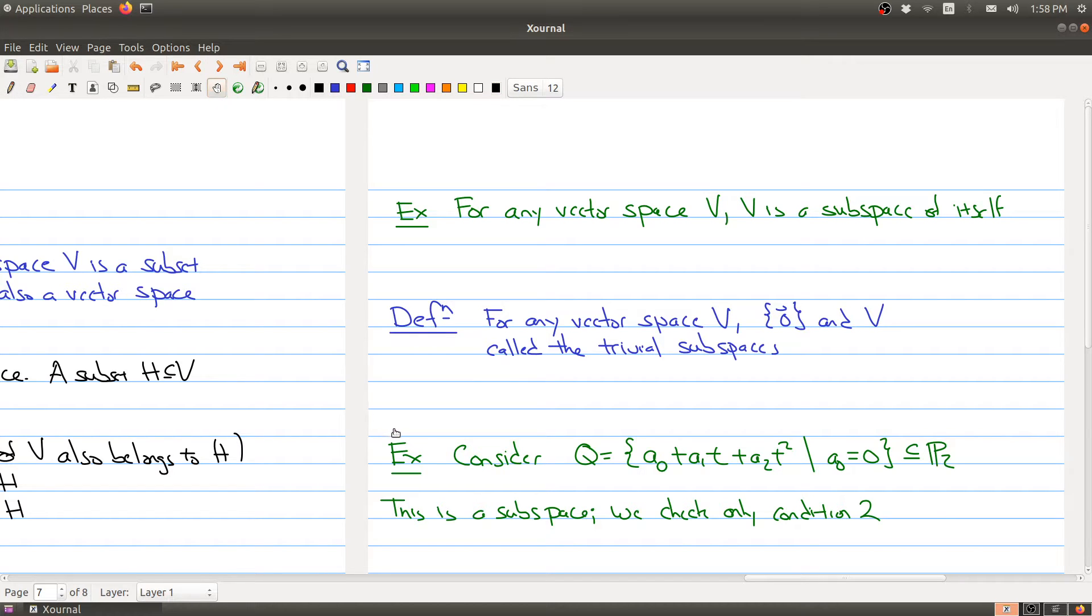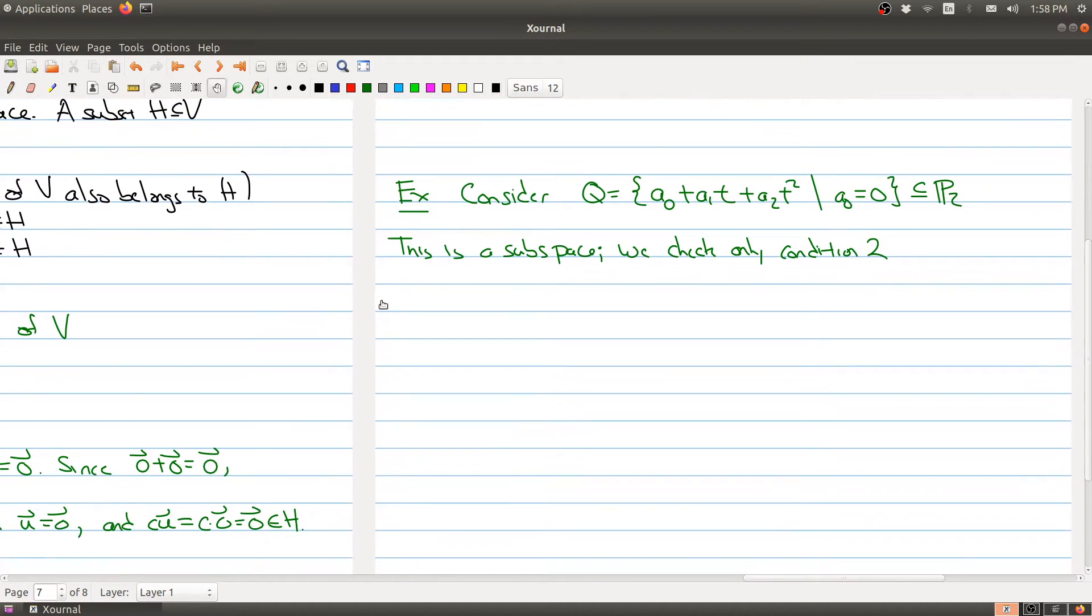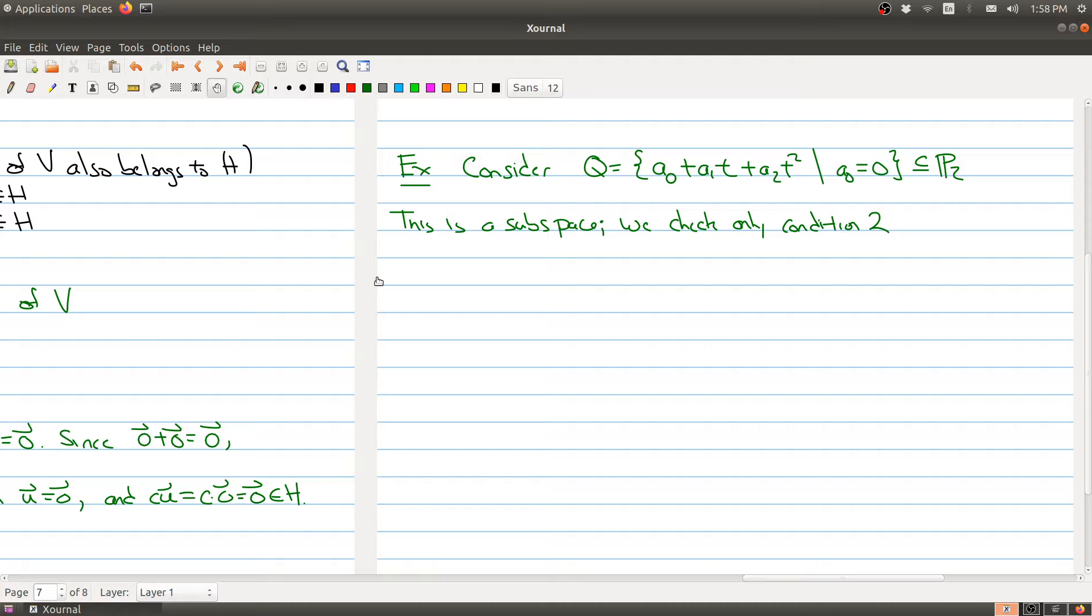Now to give you some more practice on subspaces, I have another question here. One is going to show you how to check one of the conditions, and the other one will be more of a negative result. So the first statement here is let's take Q to be all the polynomials in degree two where the coefficient term is zero.